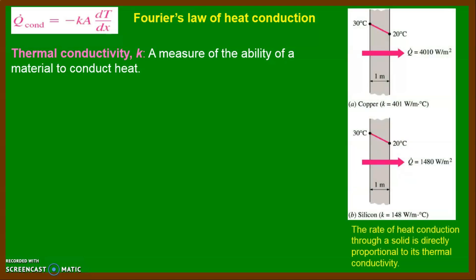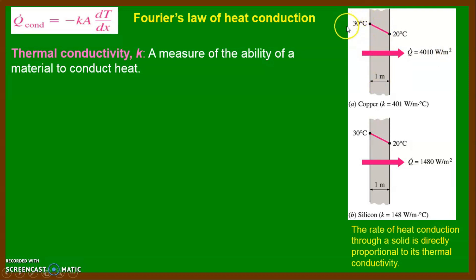Here we discuss two examples. In example A, heat flows at 4010 W/m² across a uniform one-meter thickness with a temperature difference of 30 to 20 degrees. Then we can say that copper has a thermal conductivity of 401 W/m·K (or degree centigrade).